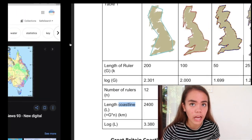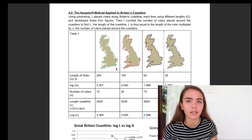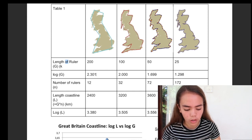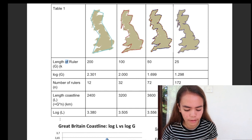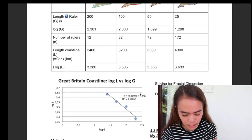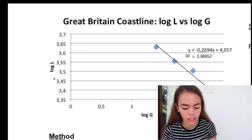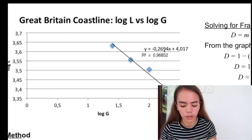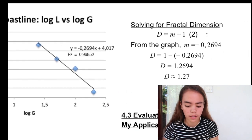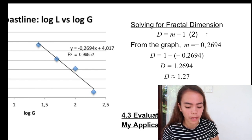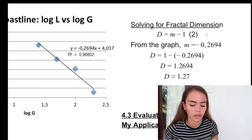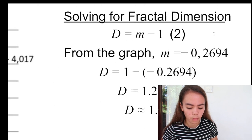Once you get your log G and log L values, you make a graph. I'm going to use the example I have in my IA. What I did is I got the length of the ruler, made that log G, got the length of the coastline, logged that as log L, and then plotted log L against log G to get a graph. From that graph I found the gradient, which was minus 0.2694. Then all I did was solve for the fractal dimension. The fractal dimension D equals 1 minus the gradient, so D equals 1 minus negative 0.2694, giving a fractal dimension of 1.2694.